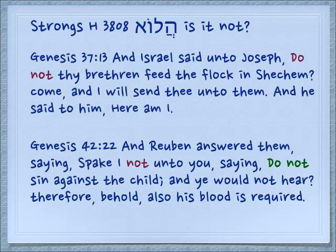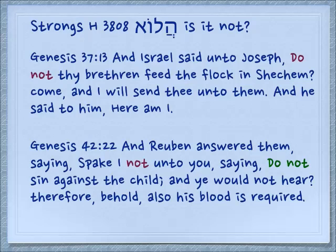Genesis 37.13: 'And Israel said to Joseph, do not thy brethren feed the flock in Shechem?' Isn't that true? You know it's true. 'Come, and I will send thee unto them.' And he said to him, 'Here I am.' Genesis 42.22: 'And Reuben answered them, saying, spake I not unto you?' Didn't I tell you this? It's a question. 'Saying, do not sin against the child. And ye would not hear. Therefore, behold, also his blood is required.'